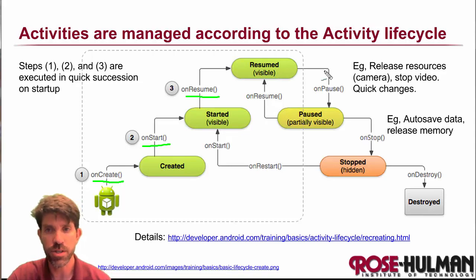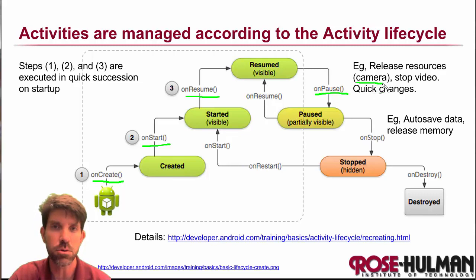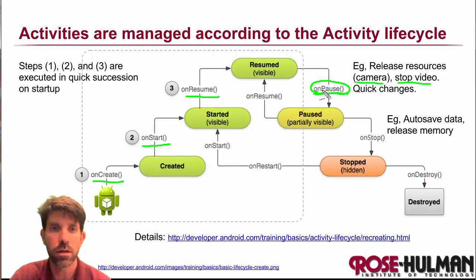The first thing that might happen is your app goes a little into the background — then Android can pause it, and it might still be even partially visible. But if it's paused and something else is in the foreground, you probably don't want to continue capturing images on your camera or playing a video. There's a callback function onPause that we can call to release some of those resources.